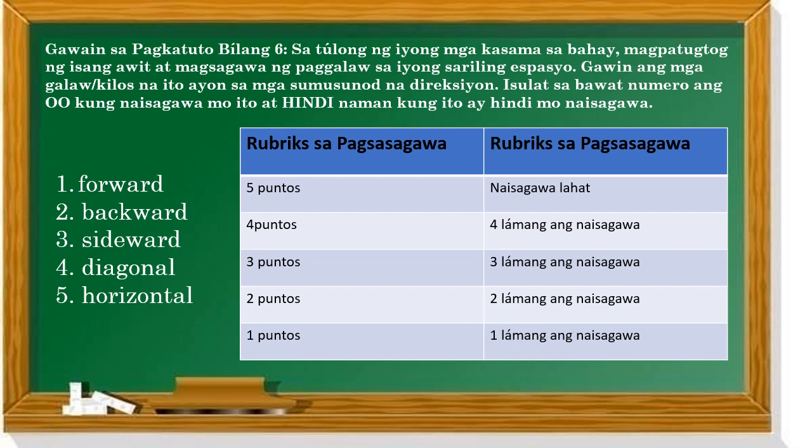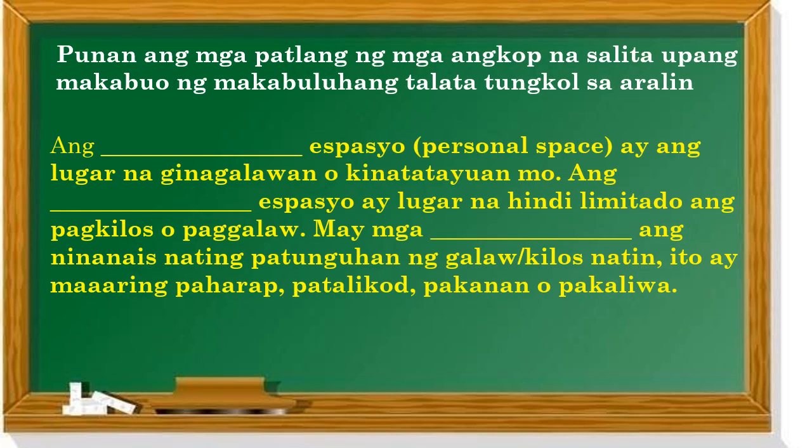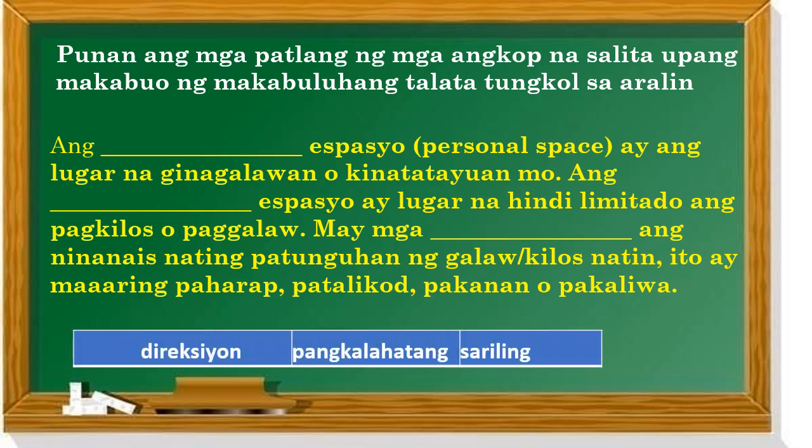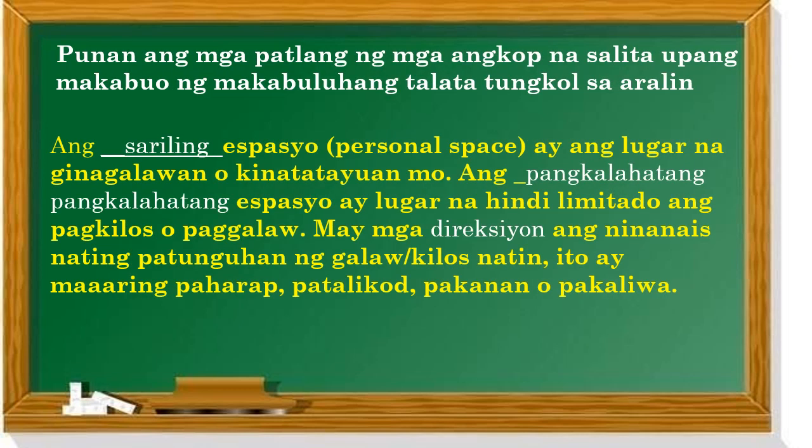Punan ang mga patlang ng mga angkop na salita upang makabuo ng makabuluhang talata tungkol sa aralin. Ang 'sarili' espasyo ay ang lugar na ginagalawan o kinakatayuan mo. Ang 'pangkalatan' espasyo ay lugar na hindi limitado ang pagkilos o paggalaw. May 'direksyon' ang nananais nating patunguhan ng galaw o kilos natin — ito ay maaaring paharap, patalikod, at pakanan o pakaliwa. Mamimili ka ng sagot sa kahon: direksyon, pangkalatan, sarili. Kung ganyan ang mga sagot mo, napakahusay mo!